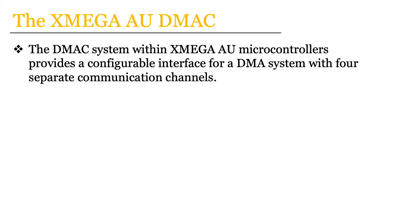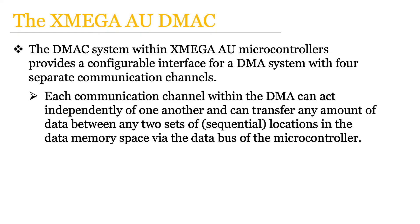As a starting point, we know that the DMA-C system within an XMega AU microcontroller is going to be the entry point or the interface for the DMA system within the microcontroller, but what we don't know yet is that the specific DMA system within an XMega AU microcontroller actually has four separate communication channels. Each of these communication channels performs this generic data transfer, and for any XMega AU microcontroller each communication channel is capable of transferring any amount of data between any two sets of locations in the data memory space, via the data bus of the microcontroller. This means that in our entire 24-bit addressable data memory space, each of these channels can send data from any set of locations in that entire space to any other set within that entire space.